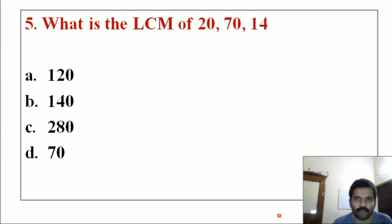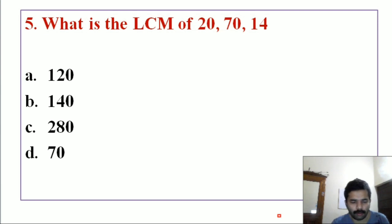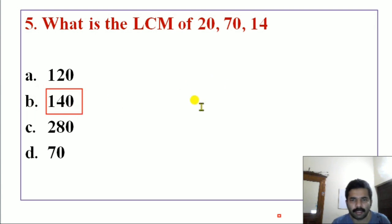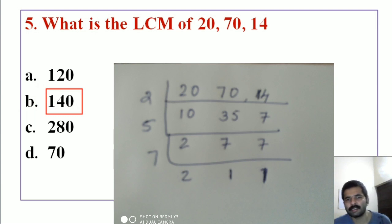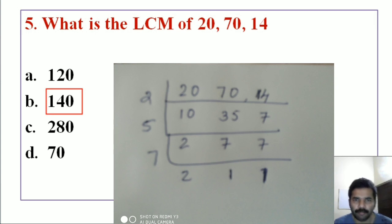Next question: What is the LCM of 20, 70, and 40? The correct answer is 140. You can check using the LCM method you already studied in previous classes. This type of question you can expect in the exam.